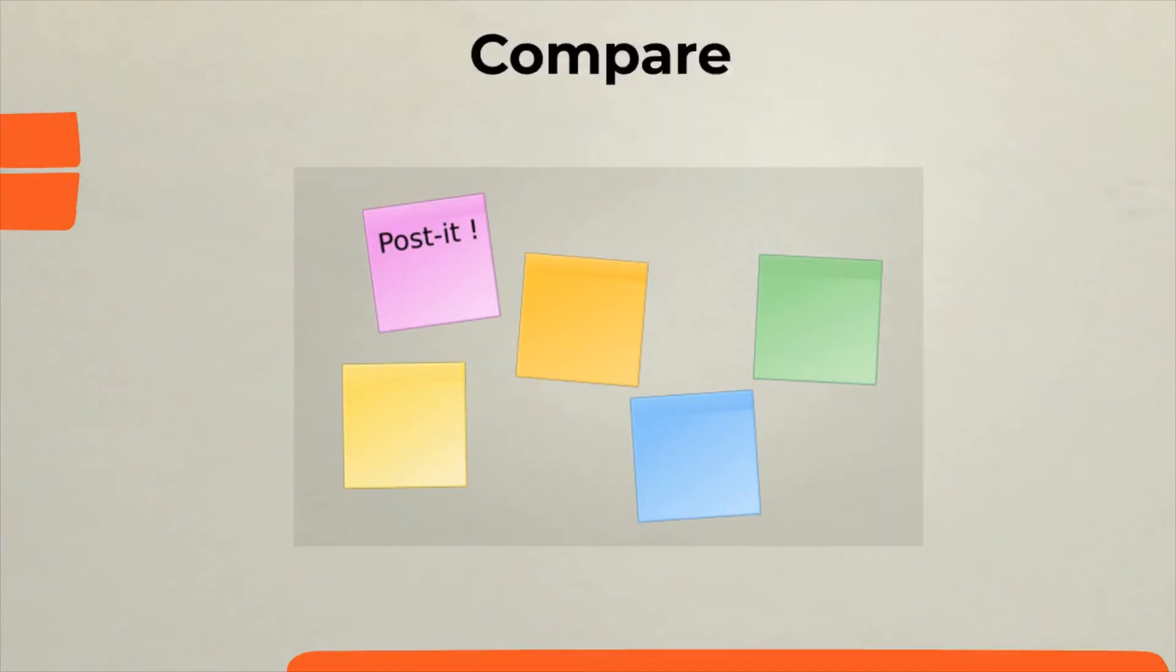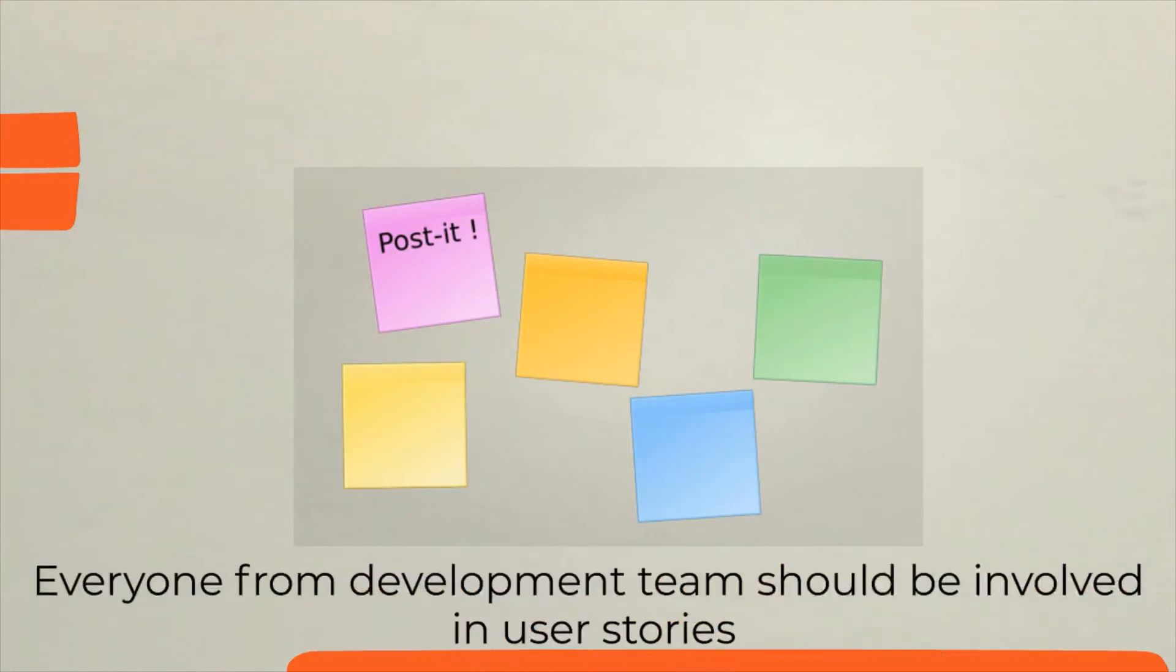So, the team will give the reference story a number from the Fibonacci sequence. Then they will take the other user stories one by one and each time ask if the user story requires more effort than our reference story. If that's the case, then they put it after that user story.